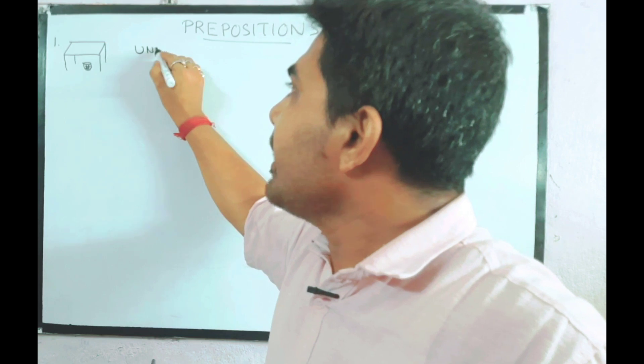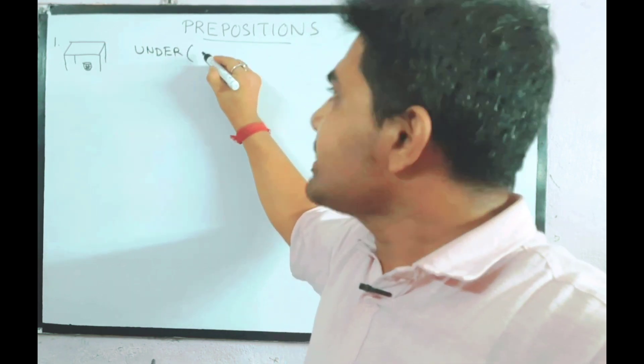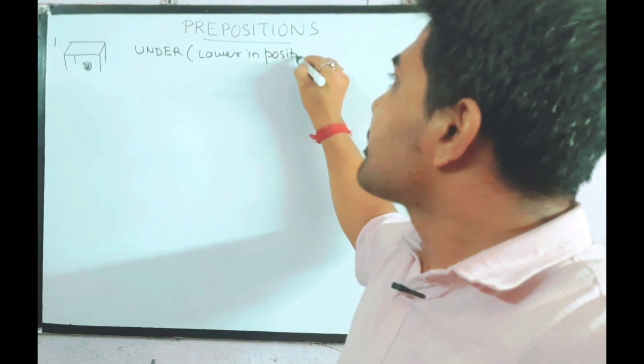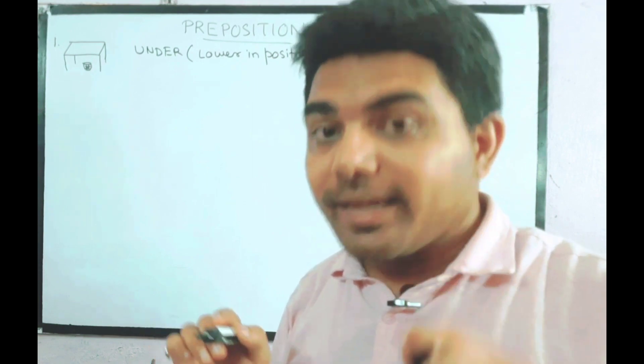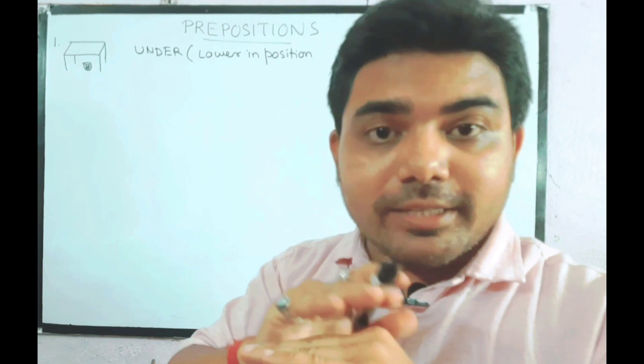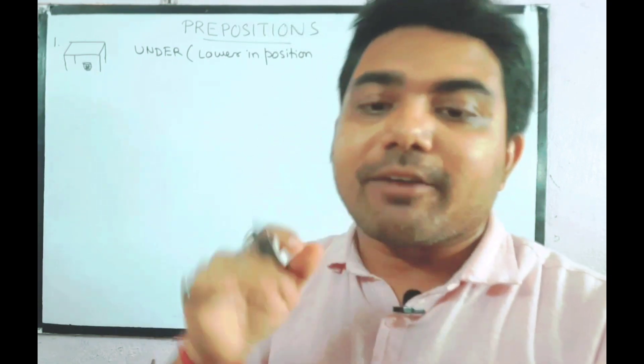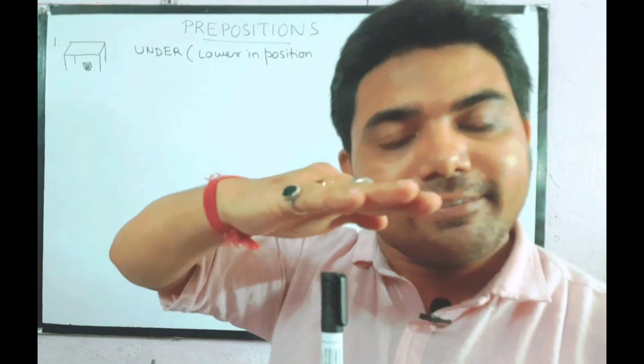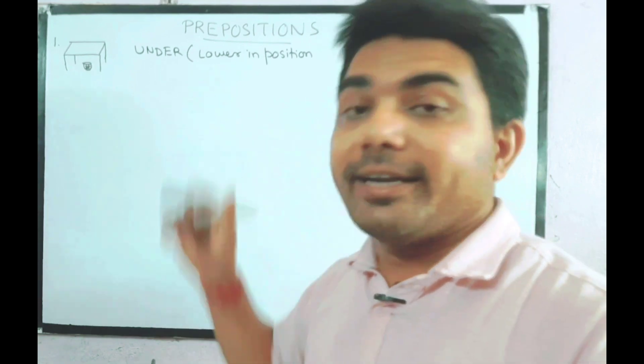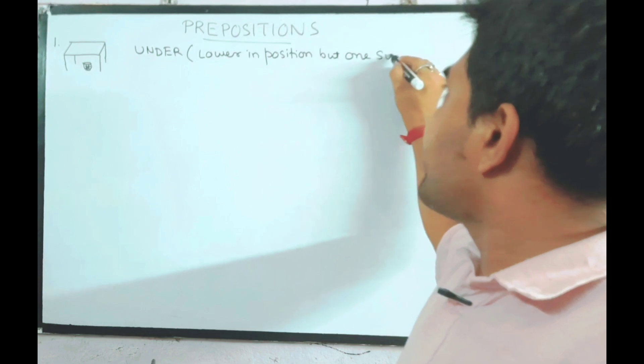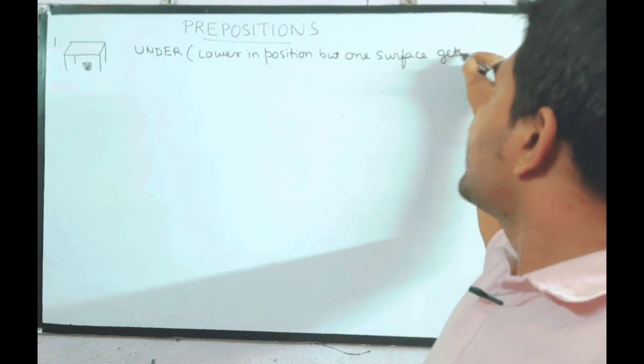Under means lower in position, but there is another thing. Under means lower in position but here the surface of the dustbin is getting covered by the surface of the table. The dustbin's surface is covered by the table's surface, so here we have to use under.